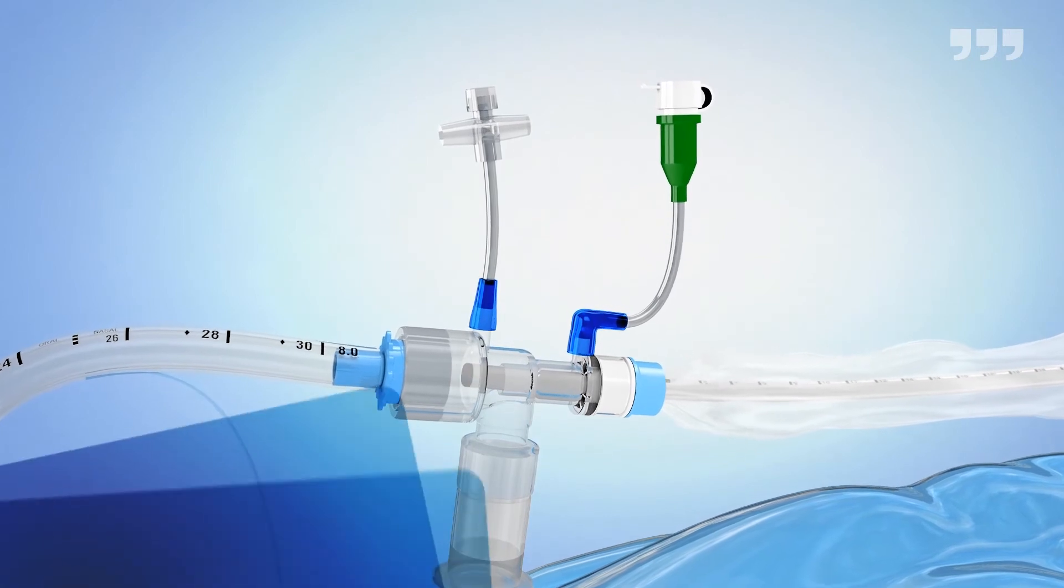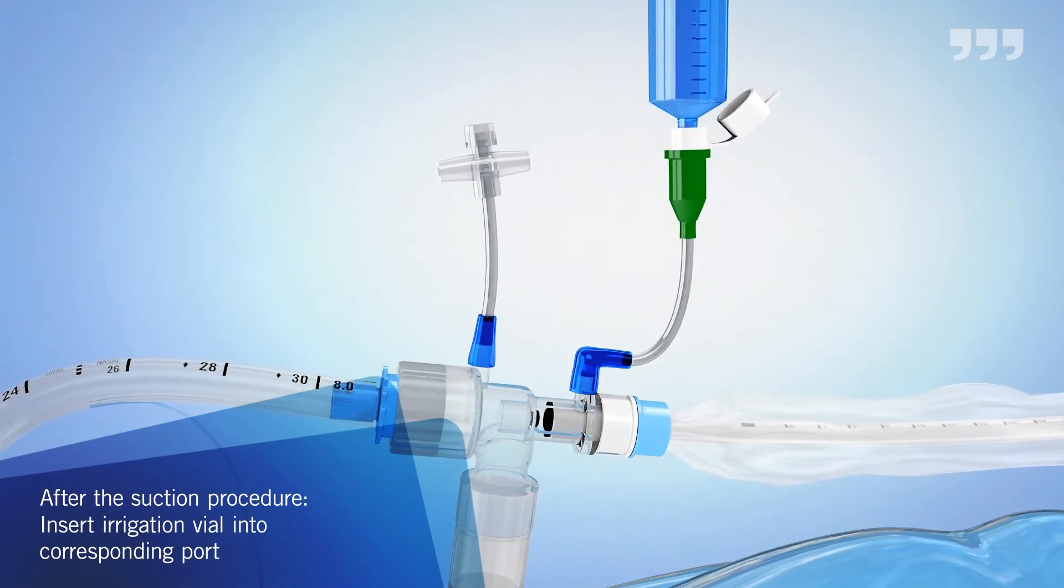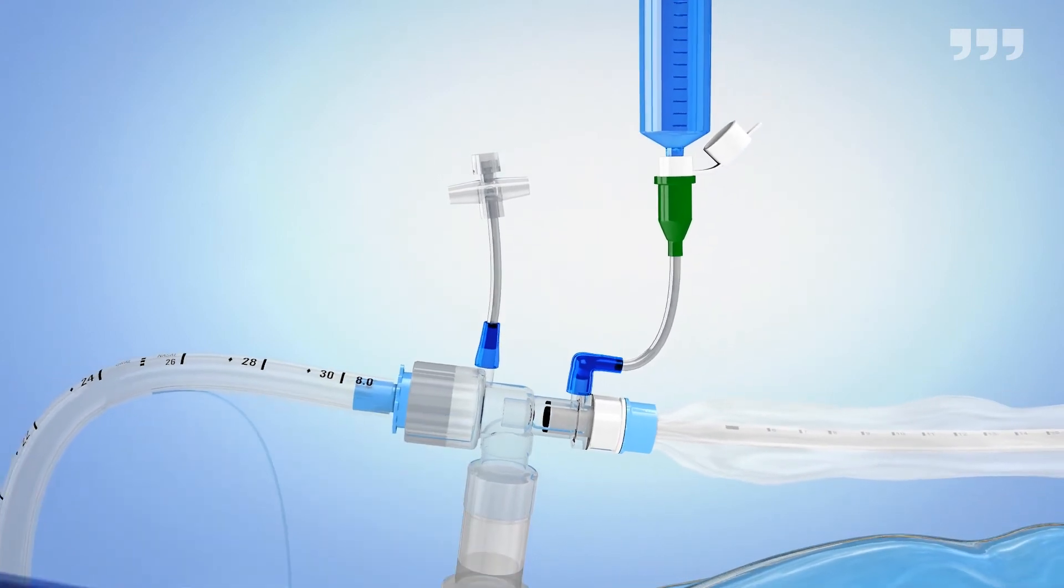To clean the catheter after finishing the suction procedure, pull the catheter tip back into the port. Insert the vial with natrium chloride in the allocated irrigation port.